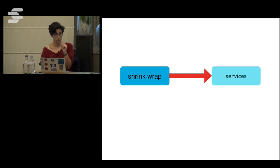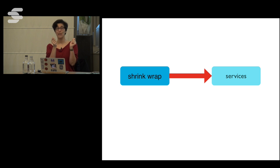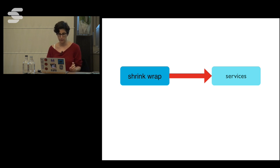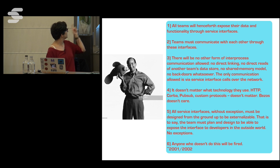Shrink wrap software — for those who don't know — is what existed in the 90s: you'd go to a shop, buy a box with a plastic wrap around it, containing diskettes or later CD-ROMs. Then you could download. But the more interesting question is where the change came from.